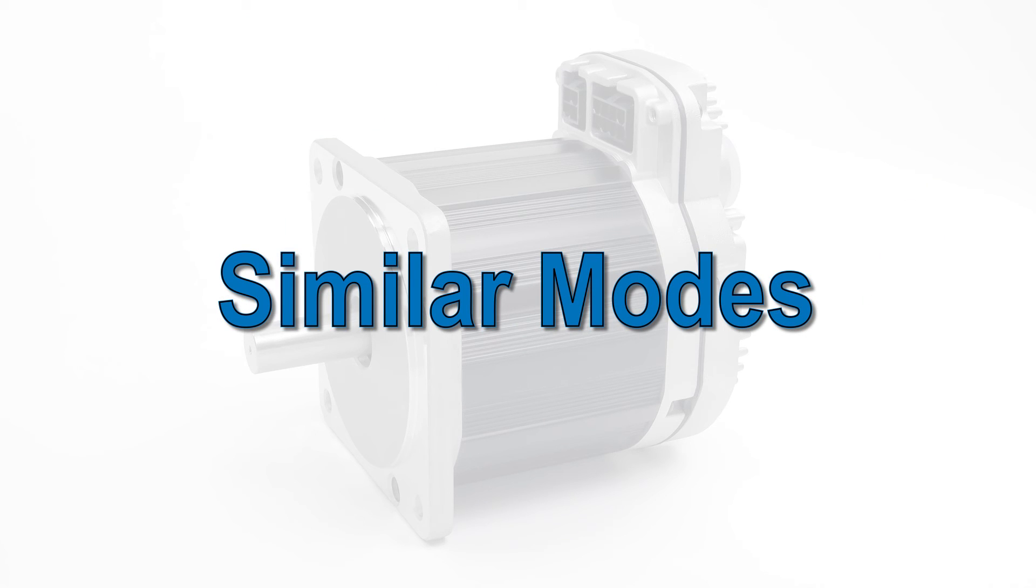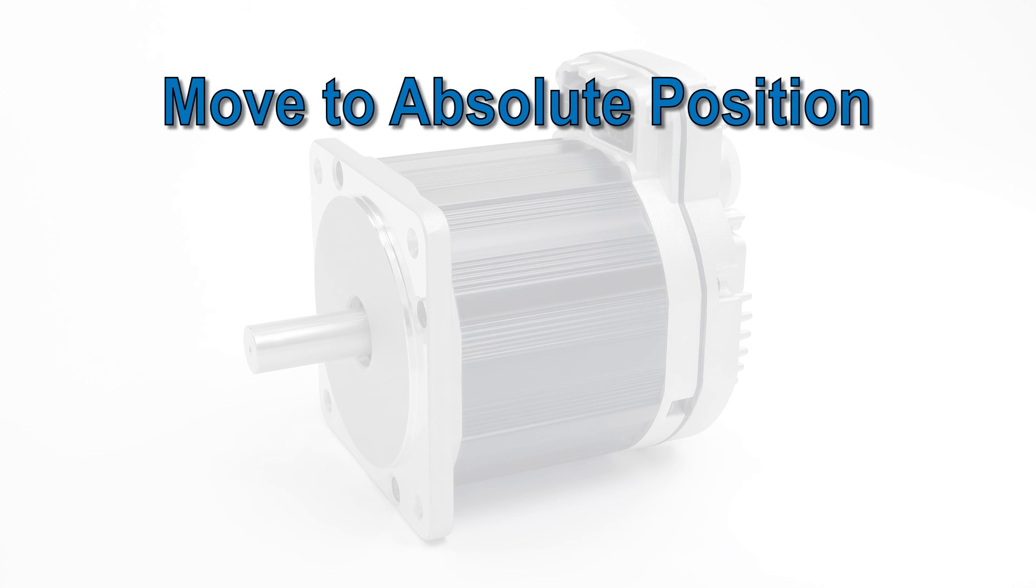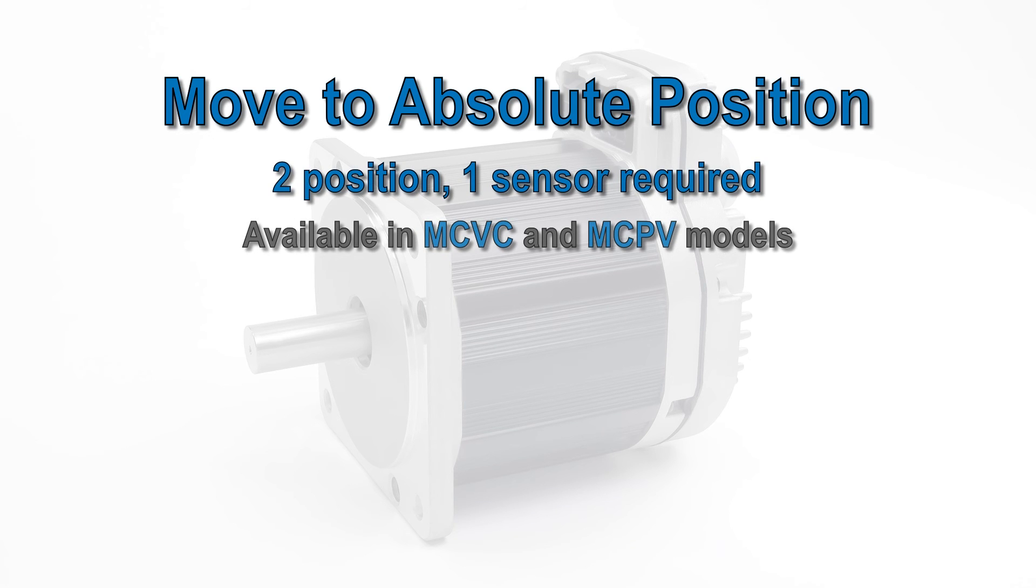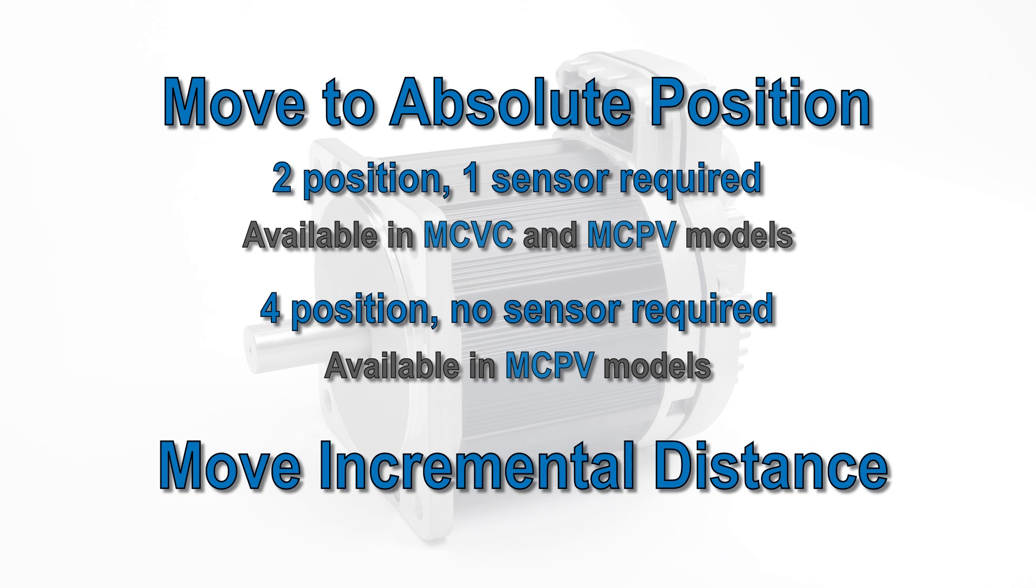If you have a two-location positioning application but would like to eliminate one or more sensors, take a look at the two move to absolute position modes. If you need to stop at a finite number of positions, but more than four, look at the move incremental distance modes.